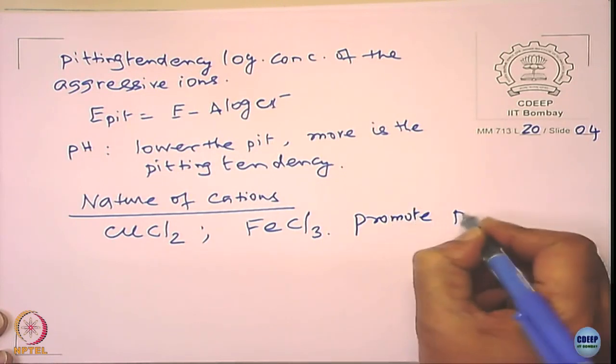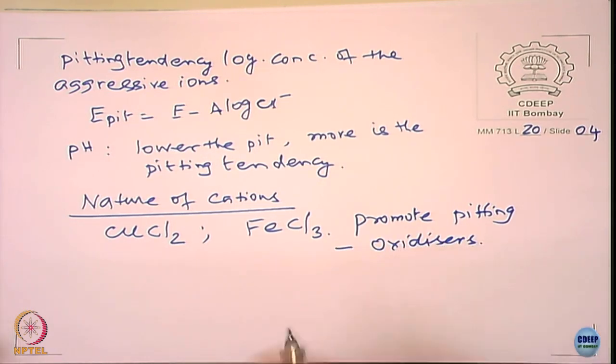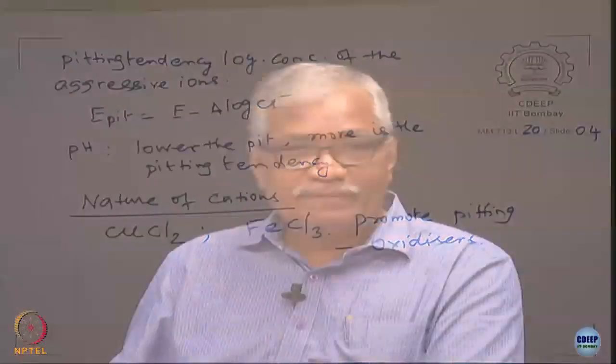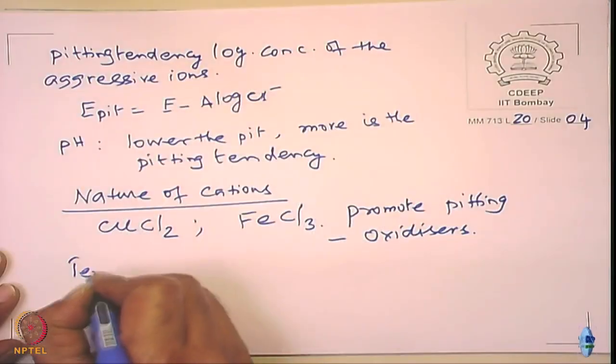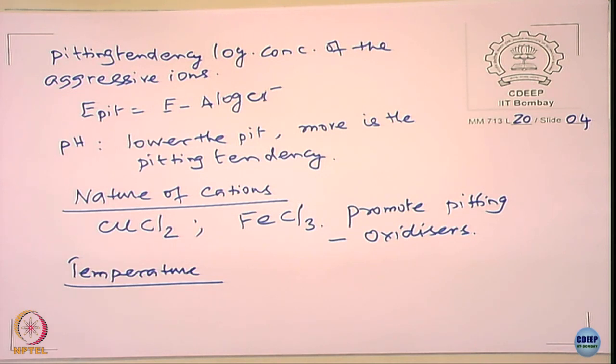When the potential goes up, the tendency of pitting increases. When you add ferric ions, these are oxidizers — they promote pitting because they raise the corrosion potential. On the other hand, if you add toning chloride or nickel chloride, they are not really going to change the electrochemical potential significantly and may not have a very significant effect on pitting corrosion. What about temperature effects on pitting corrosion?